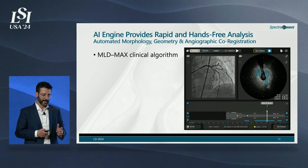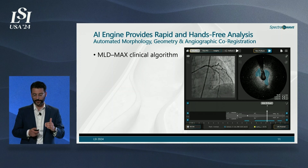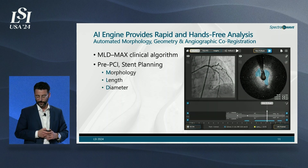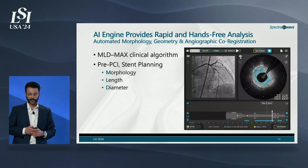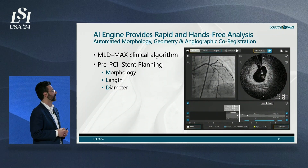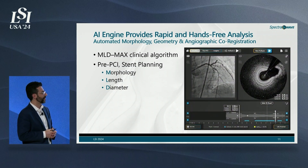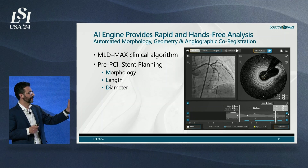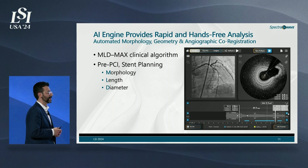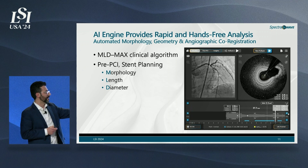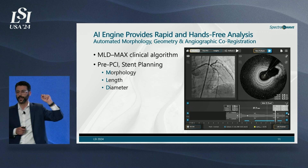Beyond image quality, it's about how quickly the physician can get to the answer. Using the standard MLD max algorithm, our platform performs a sub-second pullback scan to collect data, and within a few seconds presents all key analytics to the physician. The physician scrolls through and places flags at the desired stent edges, and the system immediately outputs all dimensions needed to size the stent — for example, a 38mm stent with proximal and distal expansion of 2.8 millimeters.